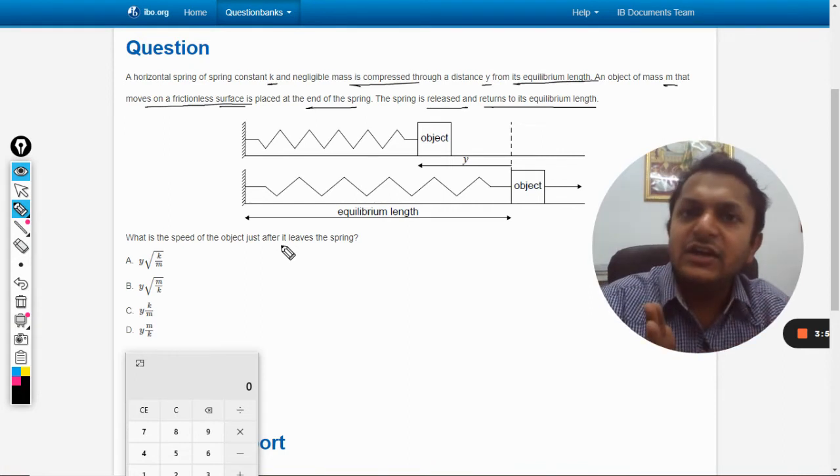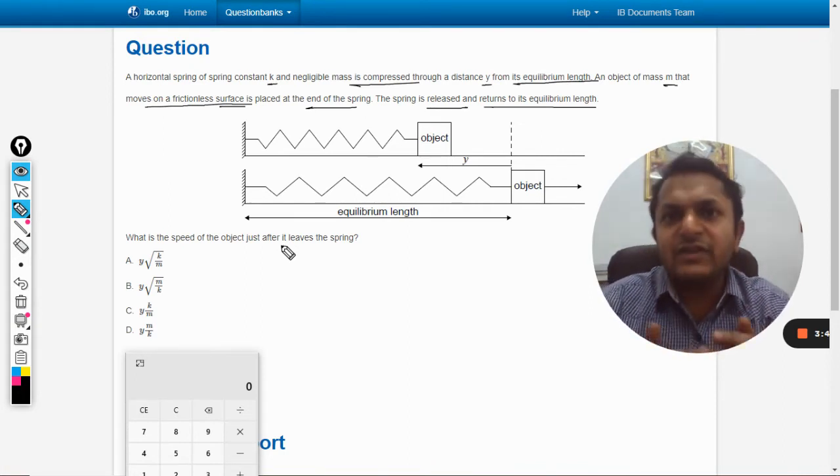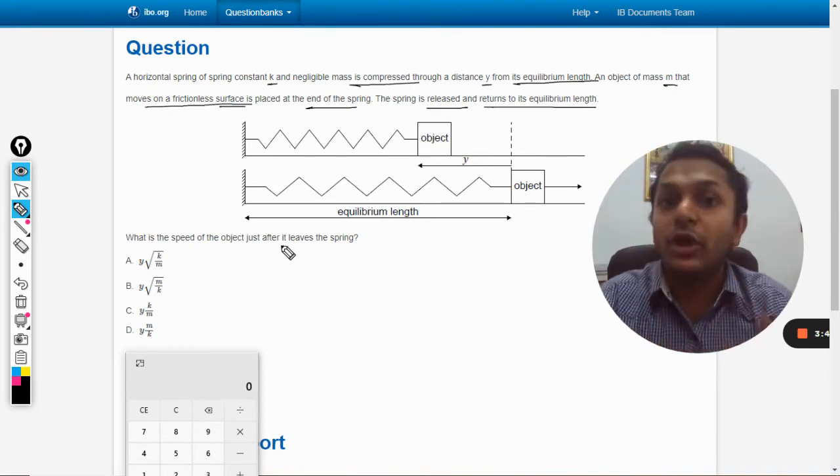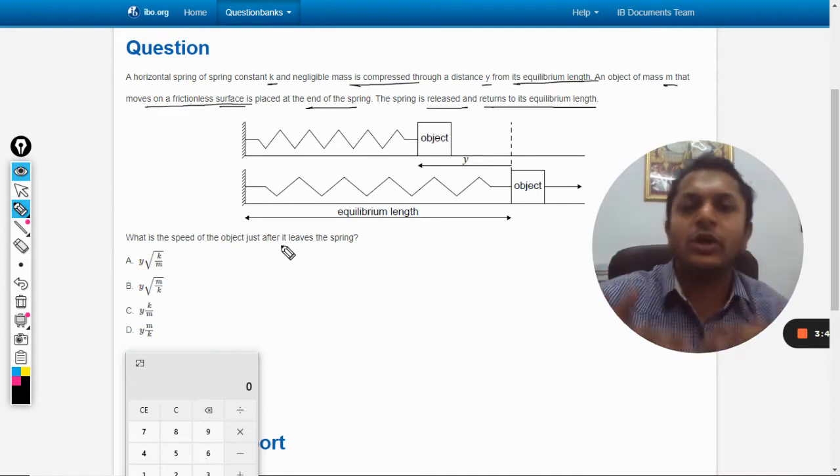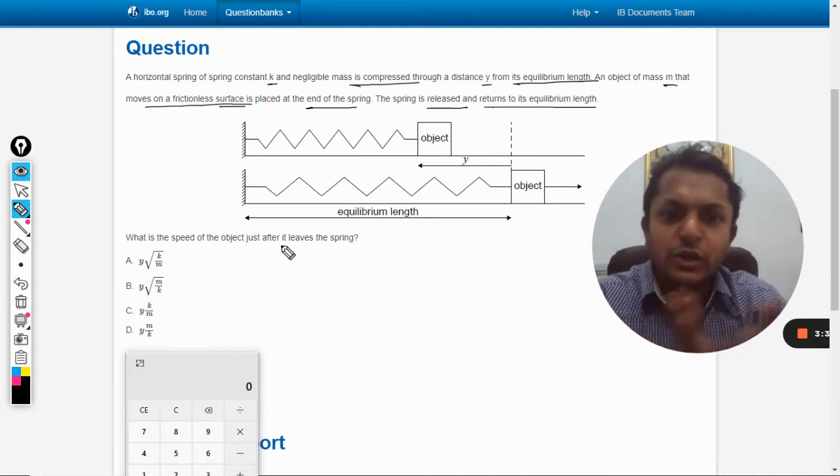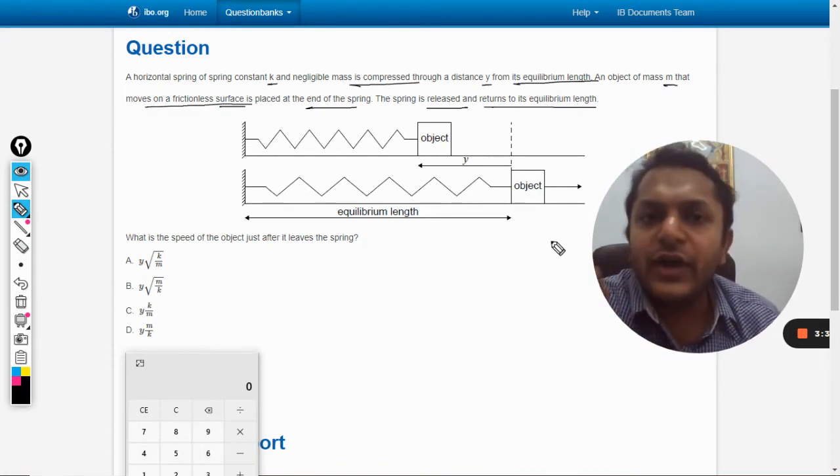The spring will start reducing its velocity, but the body has attained its velocity, so there will be a detachment between the body and the spring. Obviously, the object will move separately, so at that point we need to find the velocity.